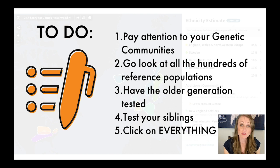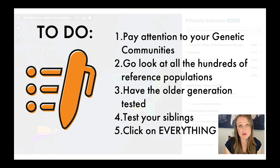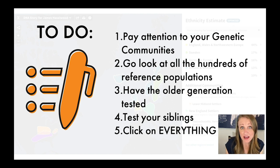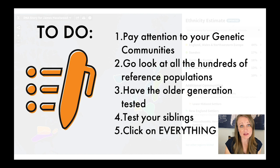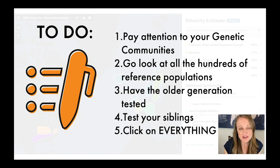If you've already tested or your older generation is not available, test your siblings. Remember, you only have half of your parents' DNA, which means your siblings have a totally different half. All of you together are going to provide a much more complete picture of your ancestral heritage than you could ever do by yourself. And last: click on everything. You're not going to break the website or delete your test — click on everything. It's the best way to learn and explore.